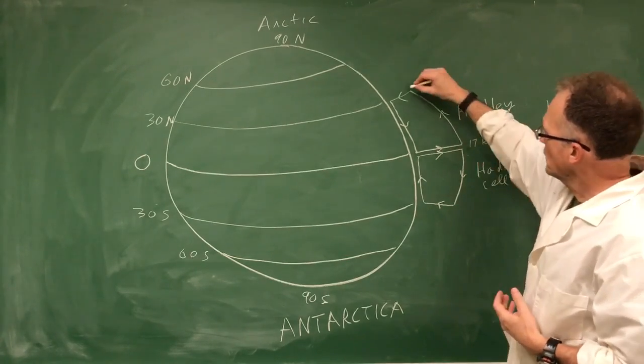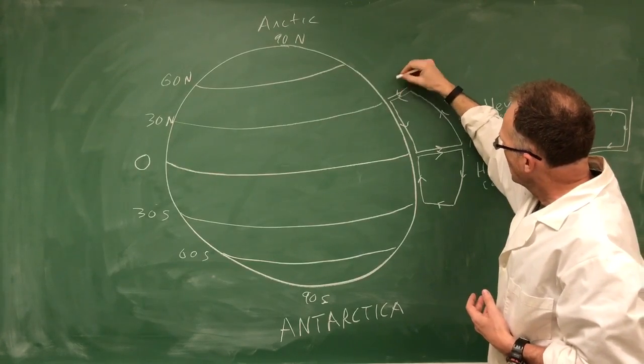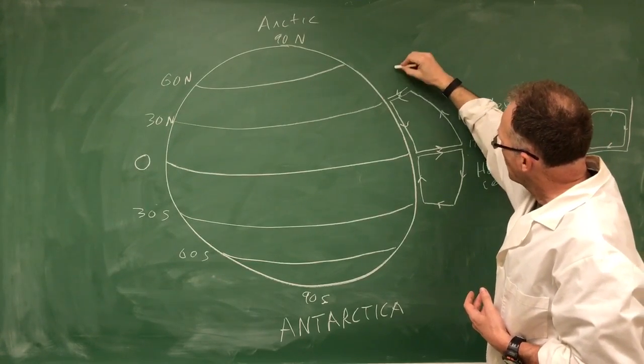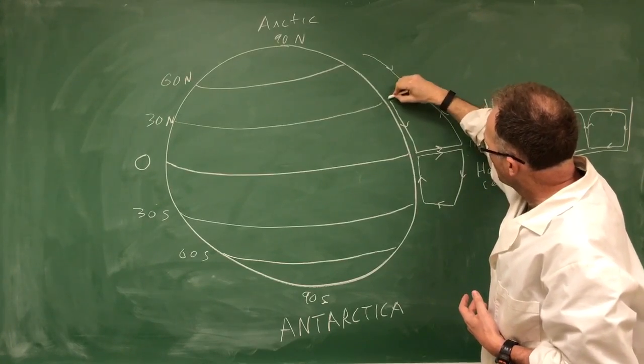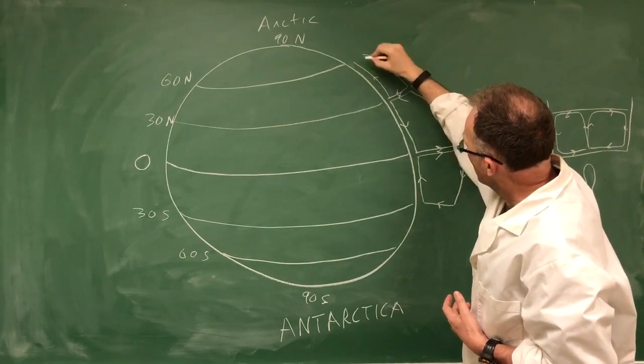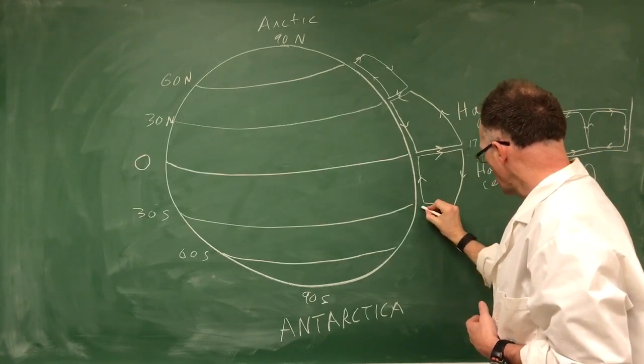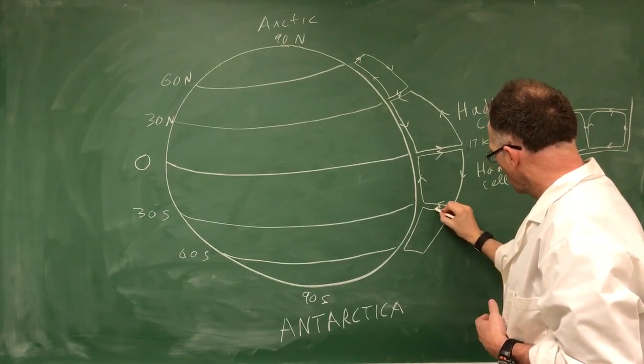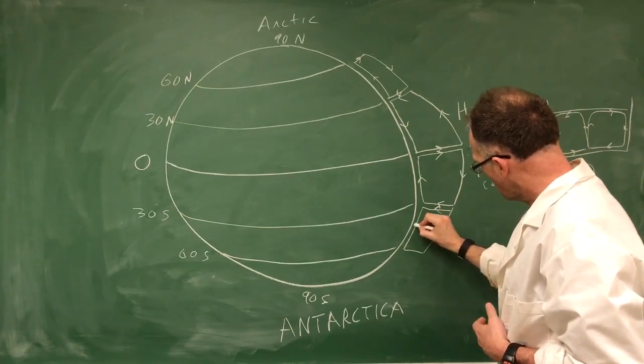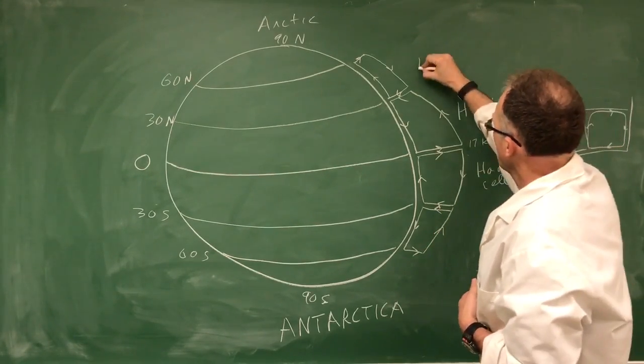Now think of this as a set of gears. So the air here is obviously descending, and it will have to come in from over here. And it will have to leave over here, and then it will rise up here. So the same thing happens here. The air is coming down, it comes in here, it comes out here, it comes up there. This is called the Ferrel cell.